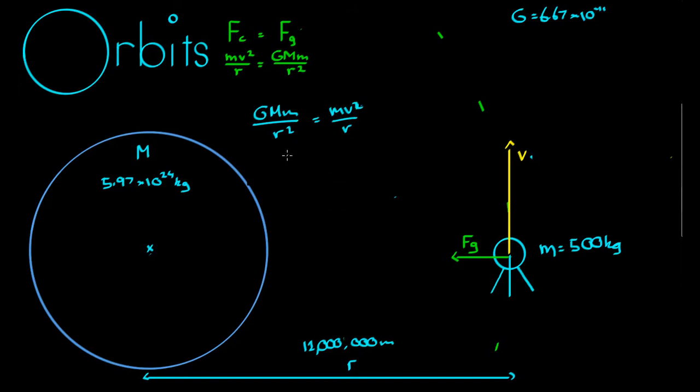Multiply both sides by r: gmm on r equals mv squared. Divide both sides by m: gm on r equals v squared. Take the square root of both sides: square root of gm on r equals v.